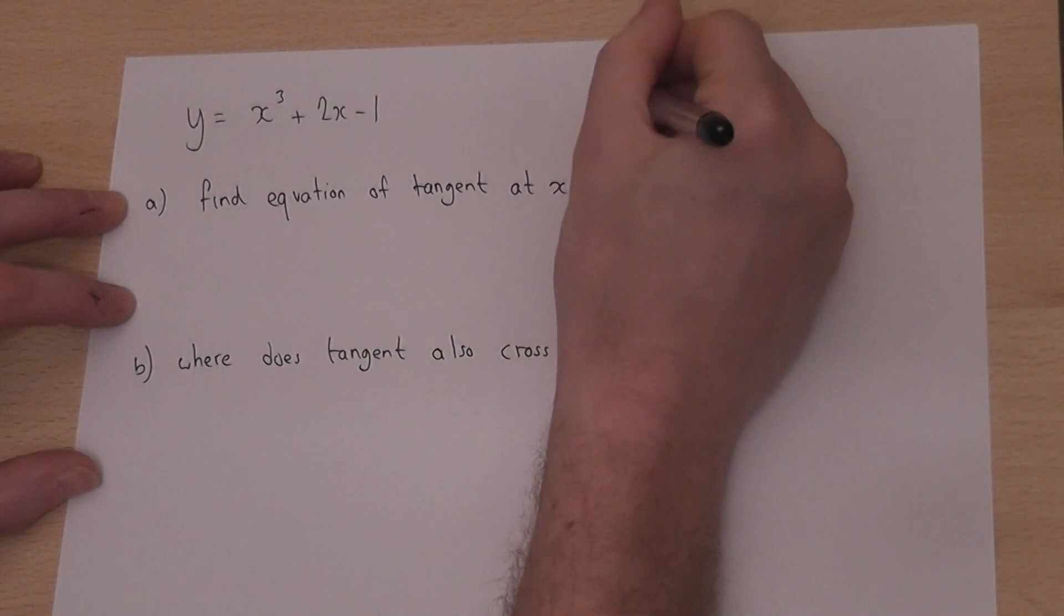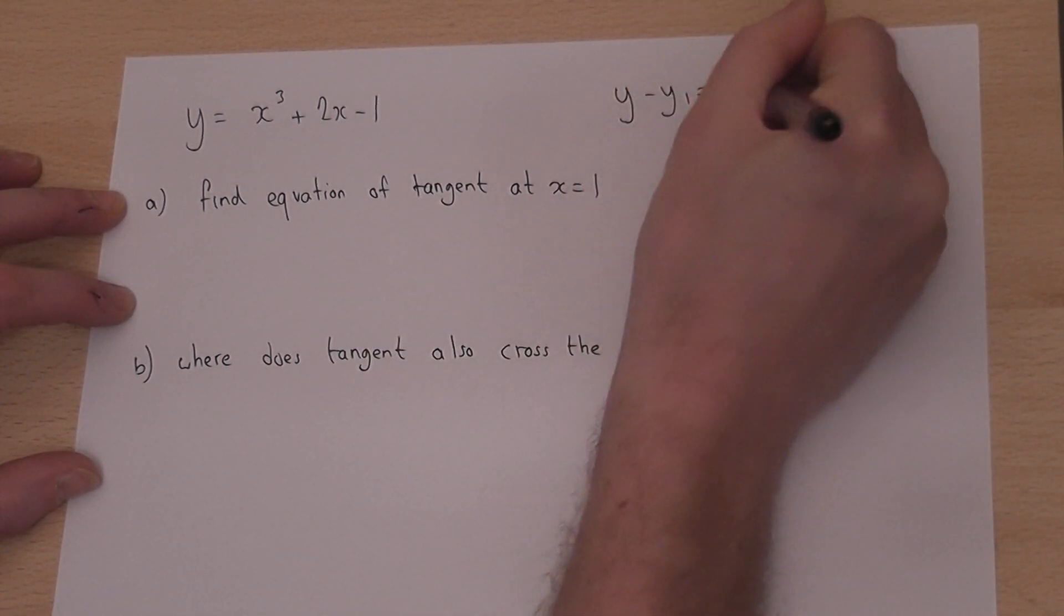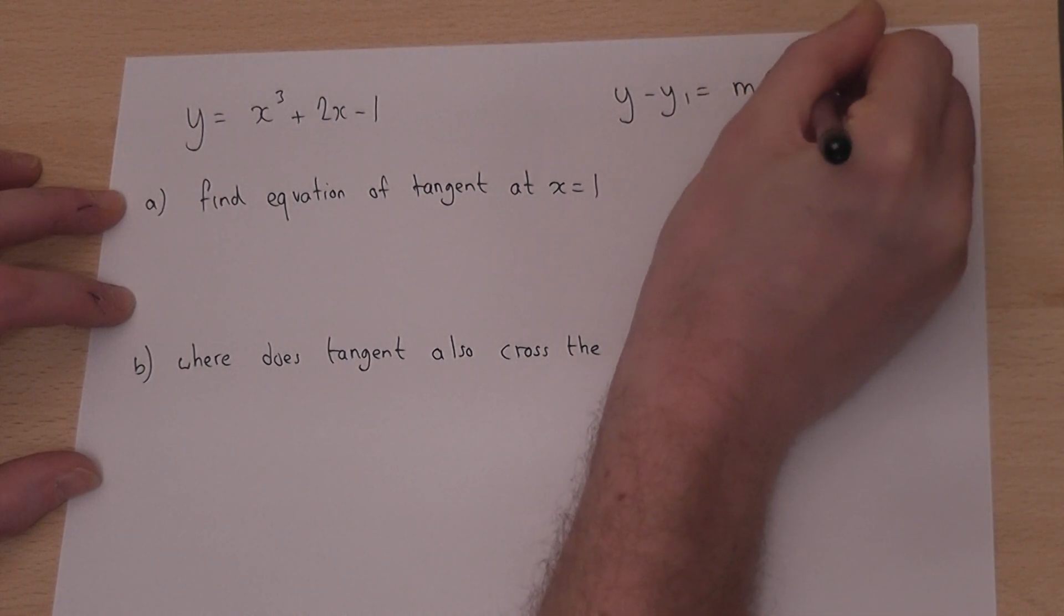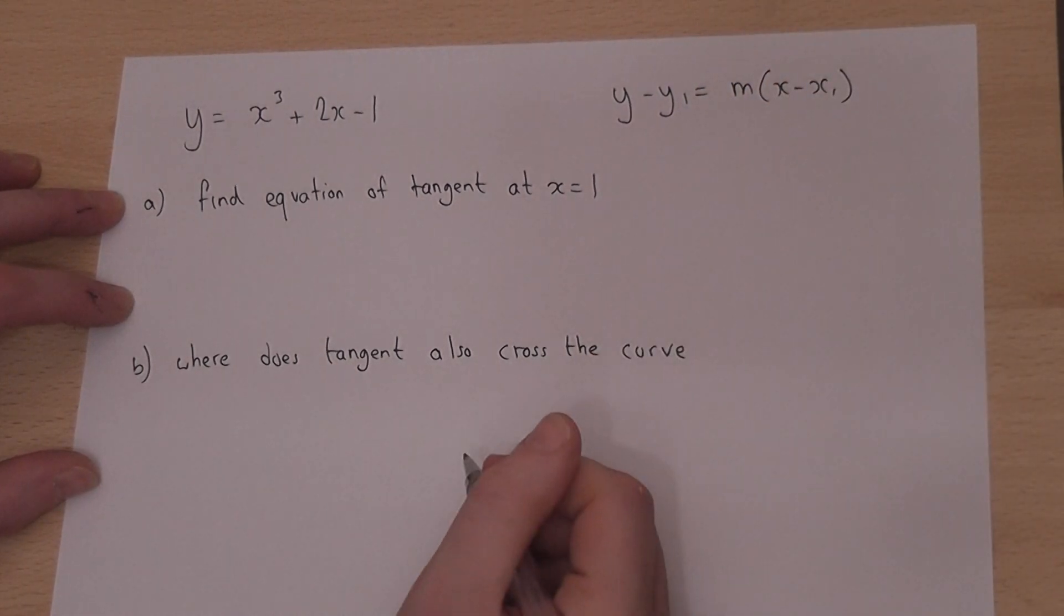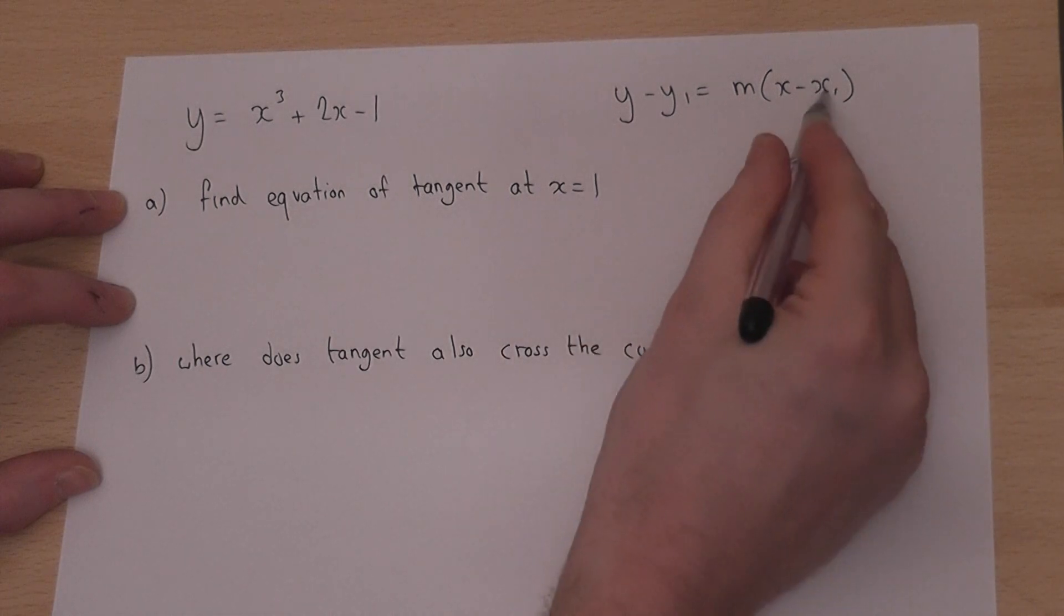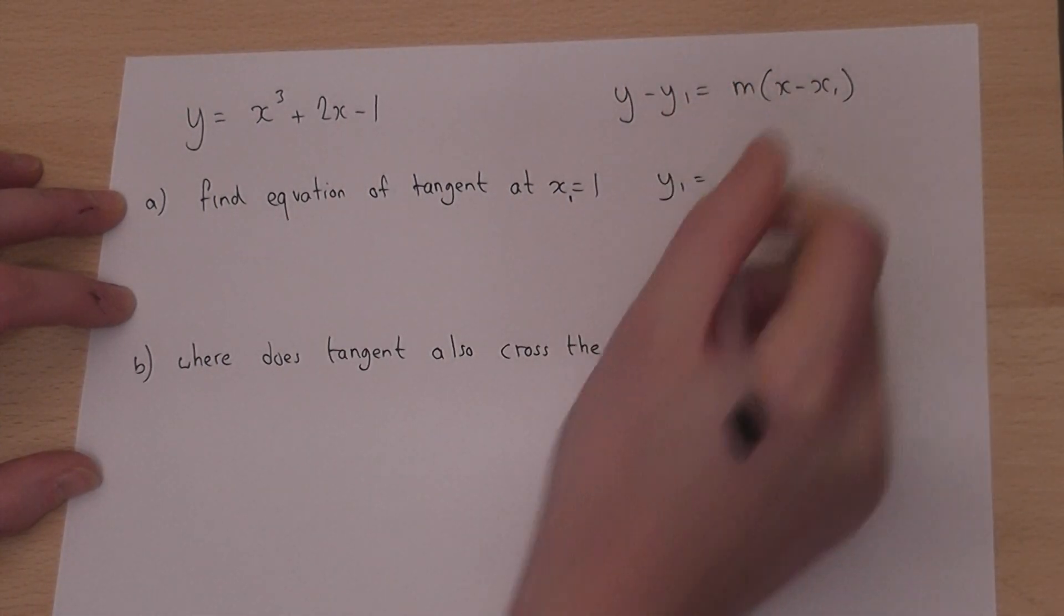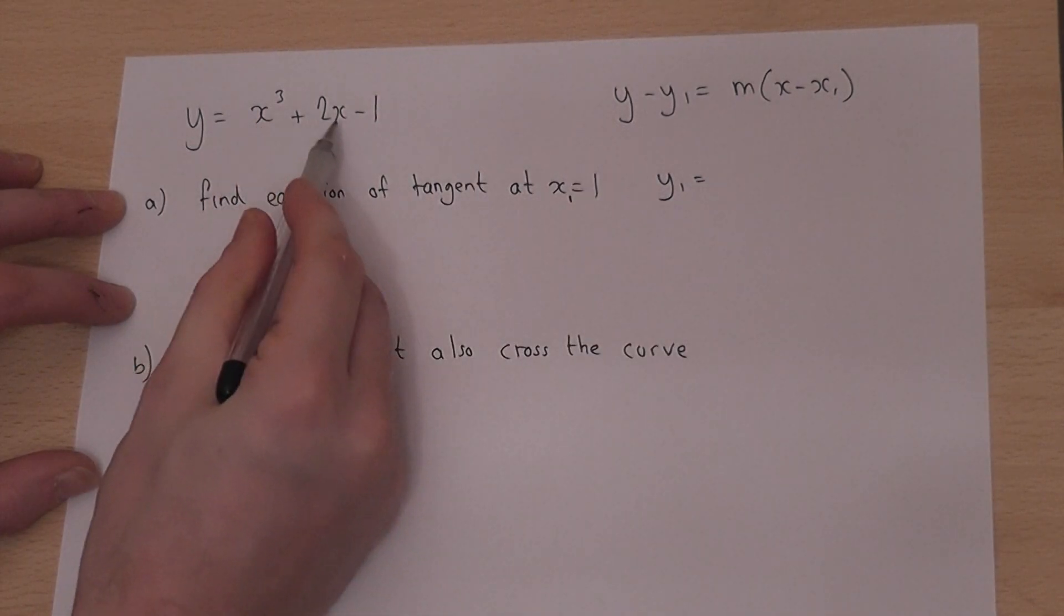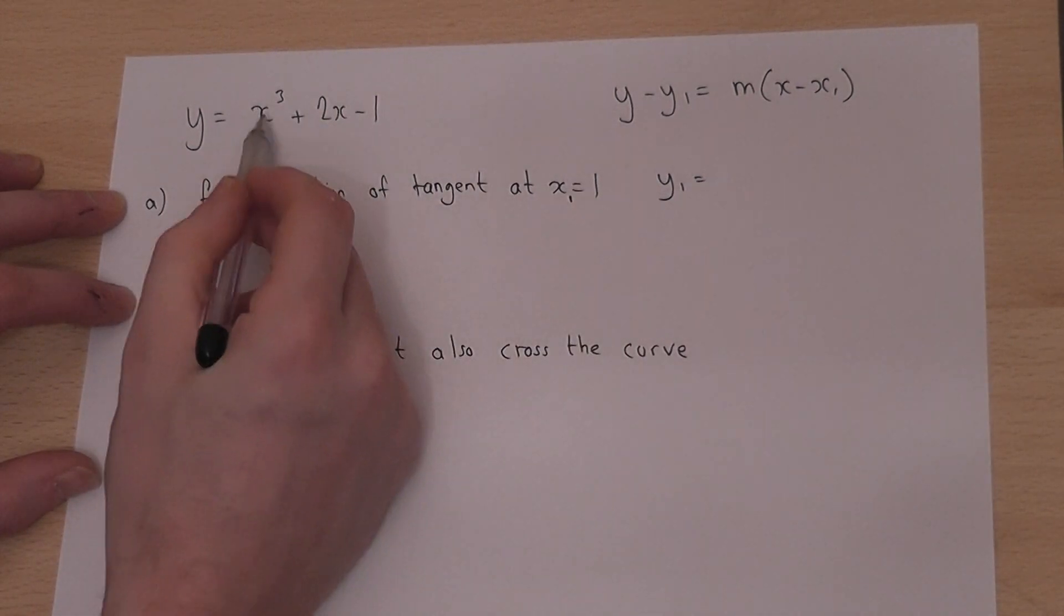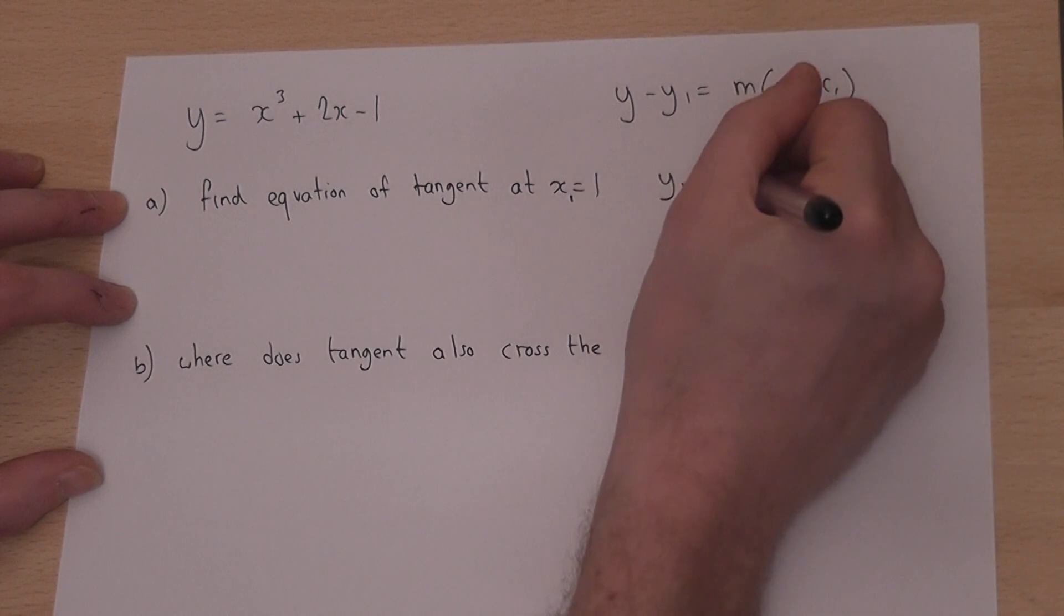Now a tangent is a line of the form y minus y₁ equals m times x minus x₁. Now I know the x coordinate is 1, so x₁ equals 1. To find the y coordinate y₁, I put 1 into this equation here.